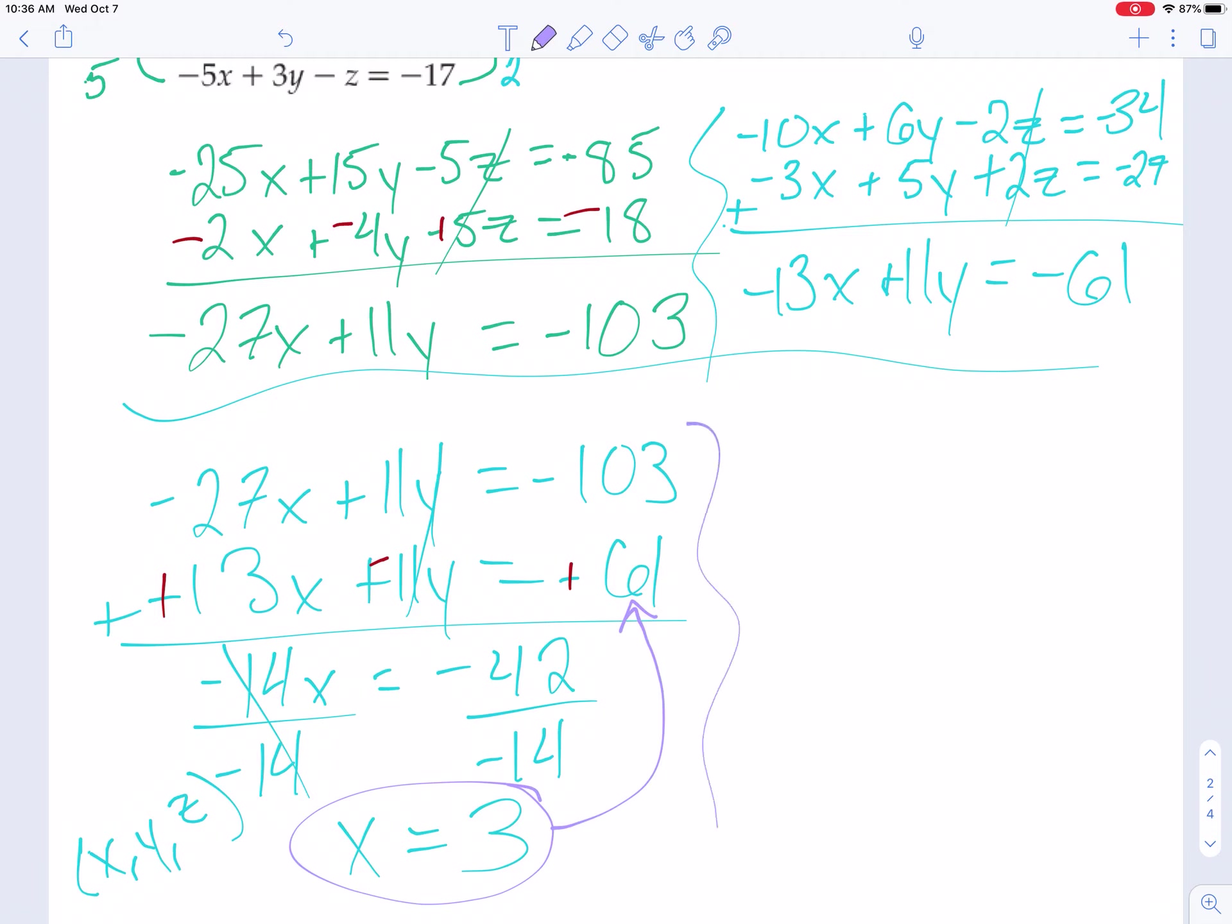So I have negative 13x plus 11y equals 61. Plugging in a 3 makes it look like this. And 13 times 3 is going to be 39. Next I'm going to be subtracting 39, which should give me negative 11y equals 22. And I'm down to some nice easy division, which makes me feel good. So I'm going to get y equals negative 2.